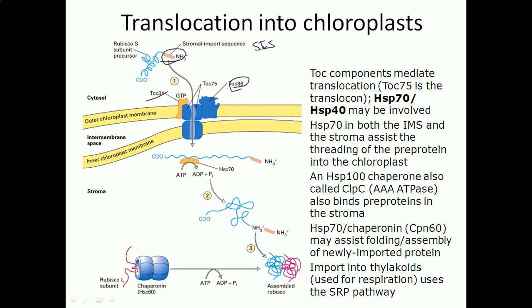Once the nascent polypeptide is inside the stroma, which is the matrix of chloroplast, it will involve the HSC70 proteins. These are chaperonins, very important proteins to guide other proteins to be folded.